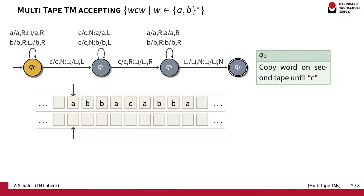Here we have a multi-tape Turing machine for the language WCW. The important part is that this W here and this W here are actually the same word — W contains only A's and B's. This C in the middle is a separator between these two parts. To compare the first part with the second part behind the C, the idea is that in the first state Q0 we simply copy all the letters from the first tape to the second tape until we reach the letter C. Then in state Q1 we move back on the second tape, keeping the head on the first tape in the same position, and then as soon as we are back on the second tape we change to Q2.